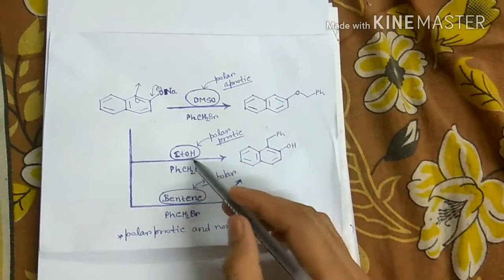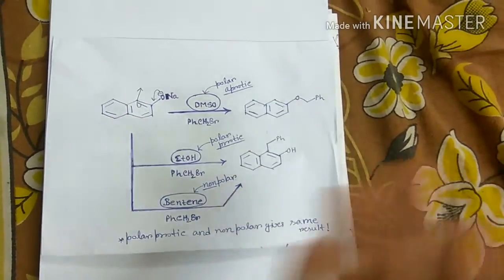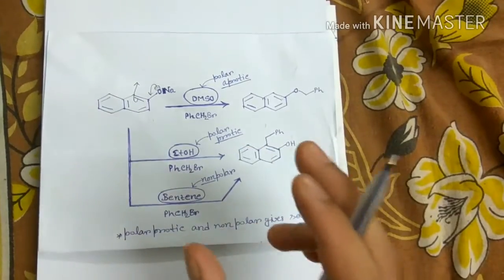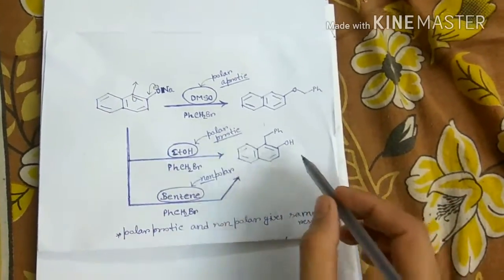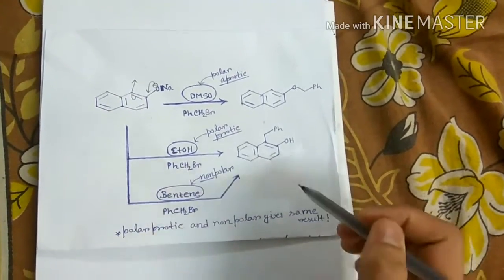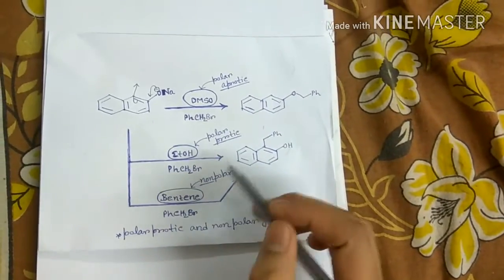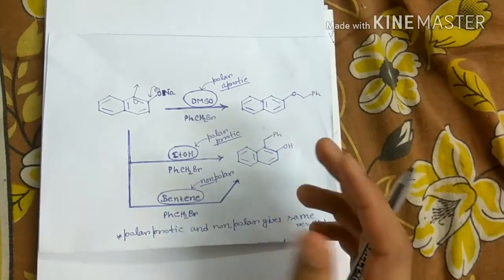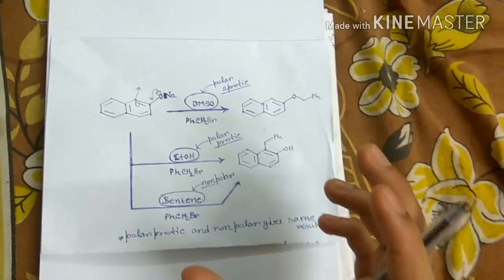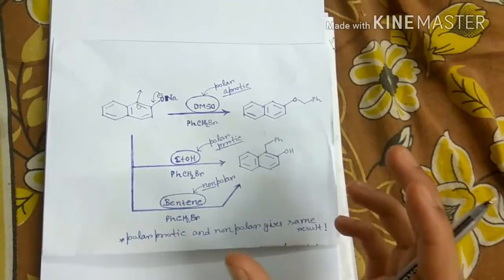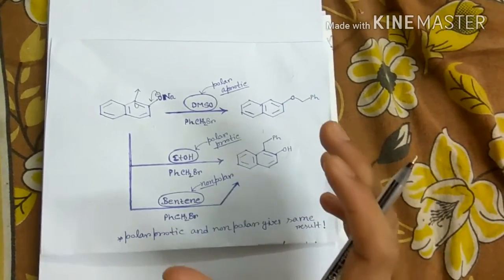This is very interesting: two extremes — one is polar protic and one is non-polar — both give the same C-alkylation product. This is a very important point, and this example illustrates how solvent is important in any chemical reaction.